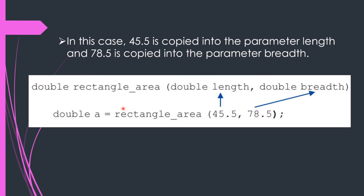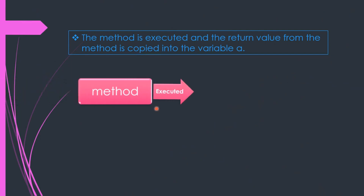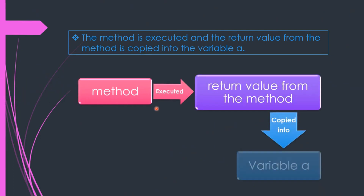Here you can see that 45.5 is copied into the parameter length and 78.5 is copied into the parameter breadth. When the method is executed, the return value from the method is copied into variable a. Arguments are values copied into parameters, and when the method executes, the resulting value is returned and stored in variable a, which represents the rectangle area.